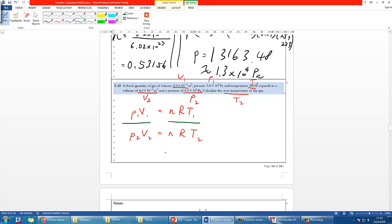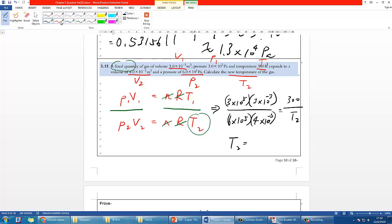Divide both of them, left to left, right to right. Since it's a fixed quantity, then n should surely cancel out, and of course the constant R will cancel out. The rest is simply you substitute all these things into it and you should be able to find T2.